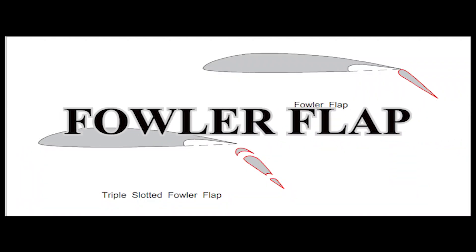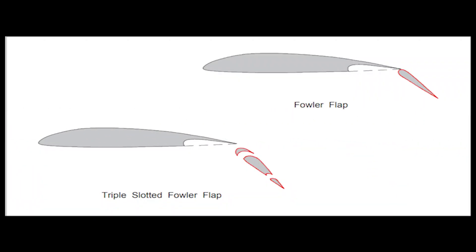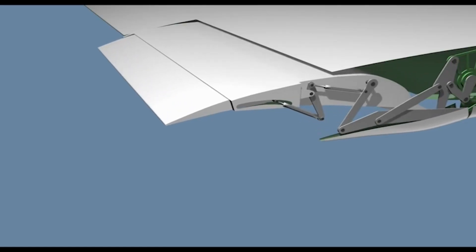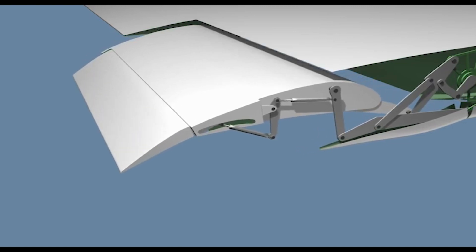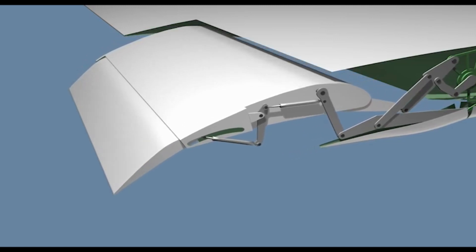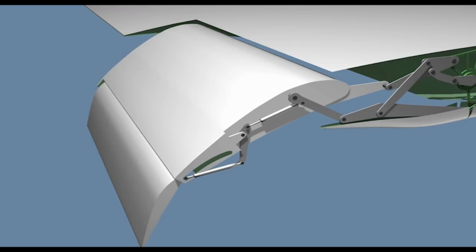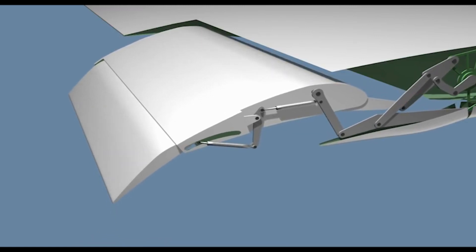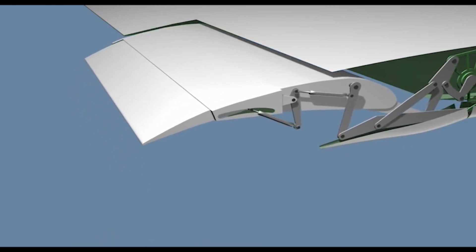Fowler flaps are a type of flap that extends backward and downward when deployed, increasing both the wing area and the wing's camber. Because of the combined effects of increased area and camber, the Fowler flap gives the greatest increase in lift of all the flap types considered, and also gives the least drag because of the slot and the reduction of thickness.